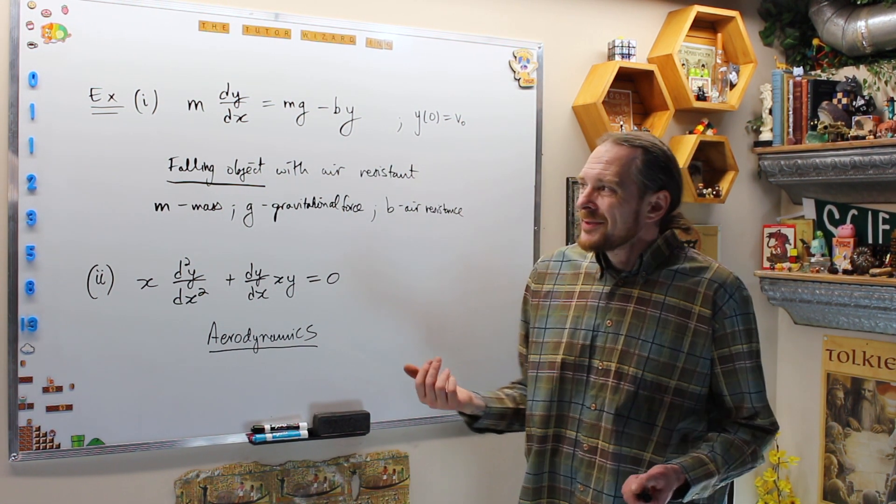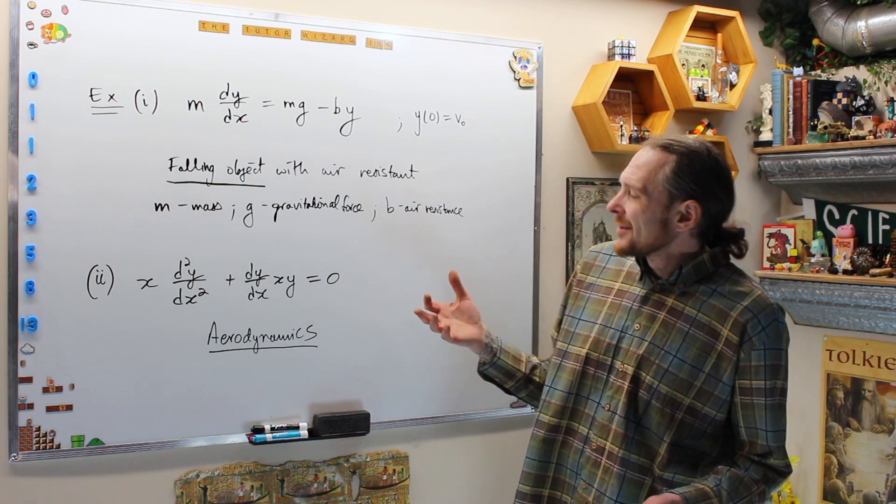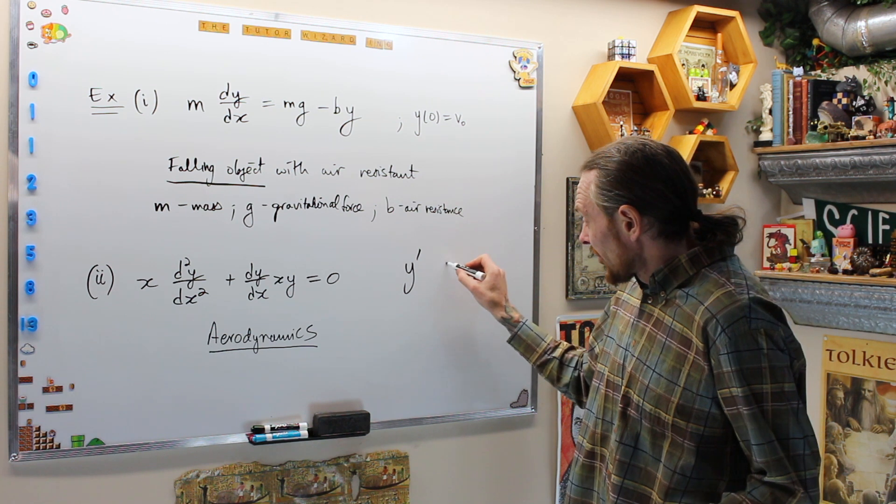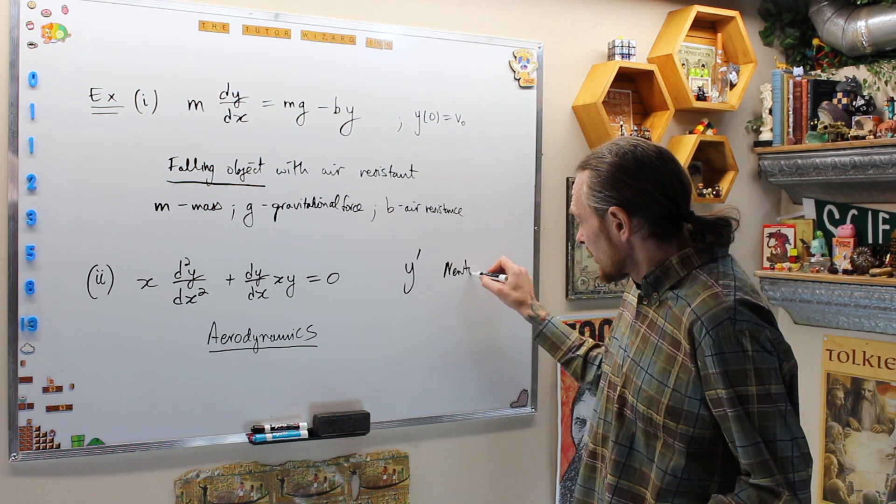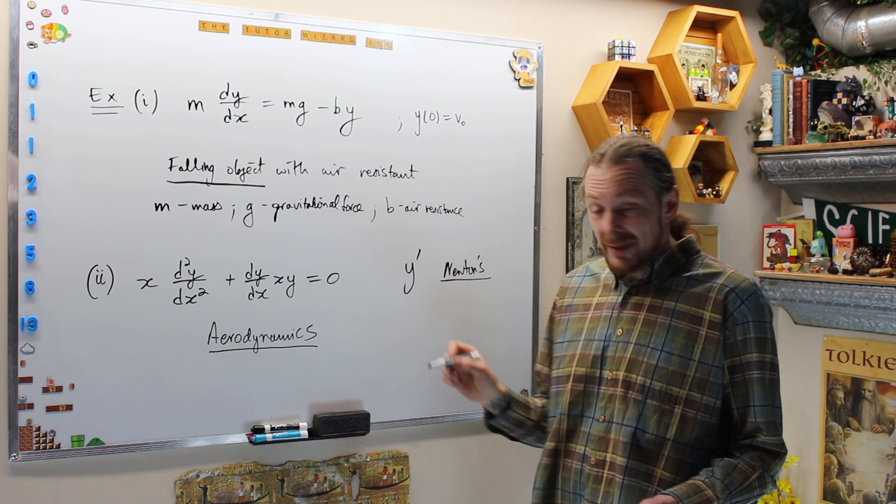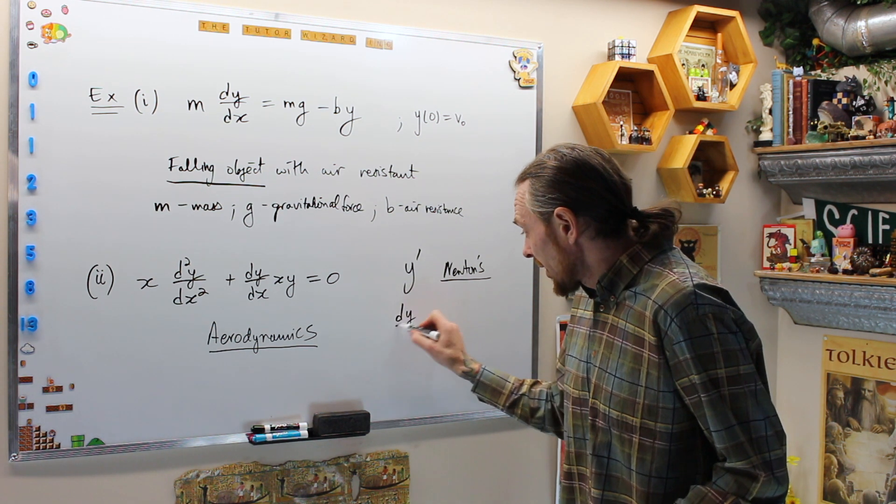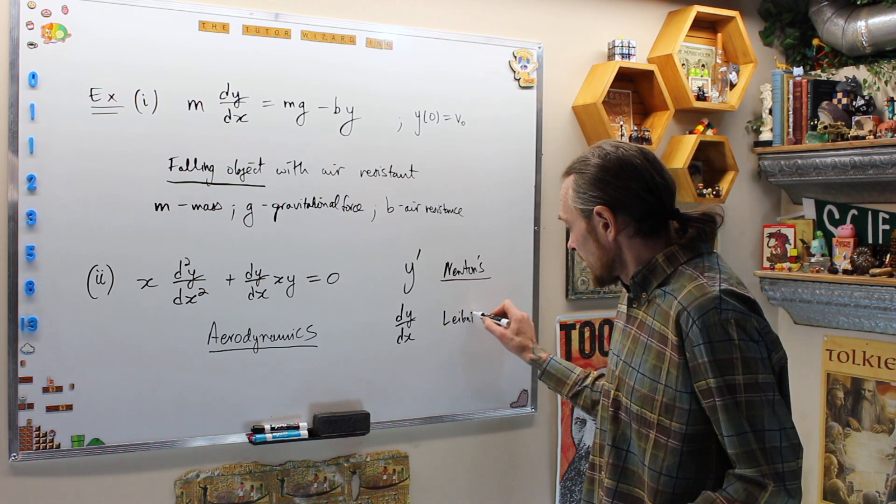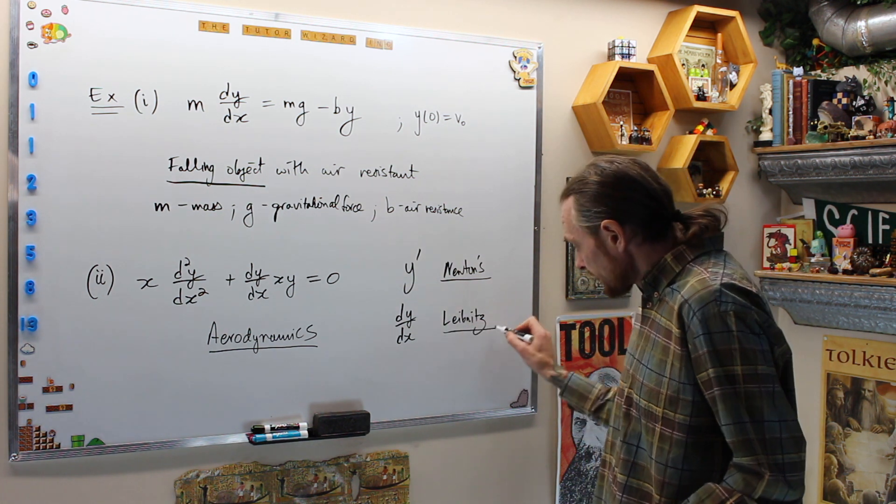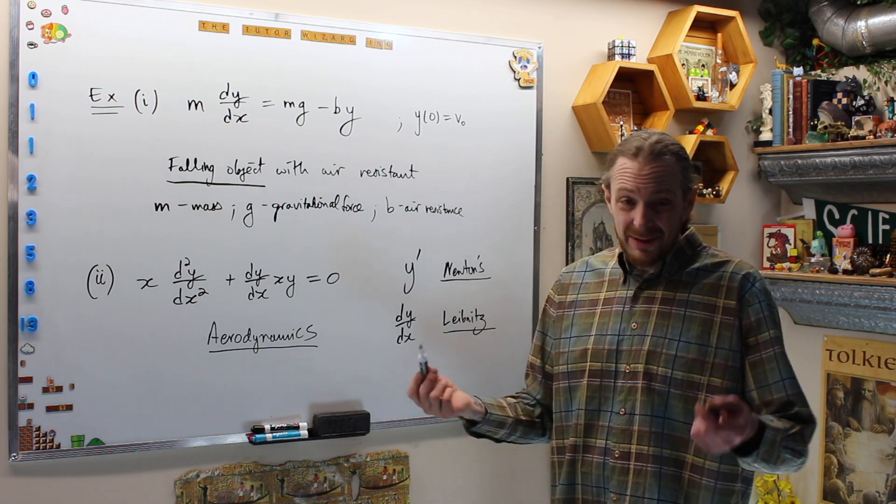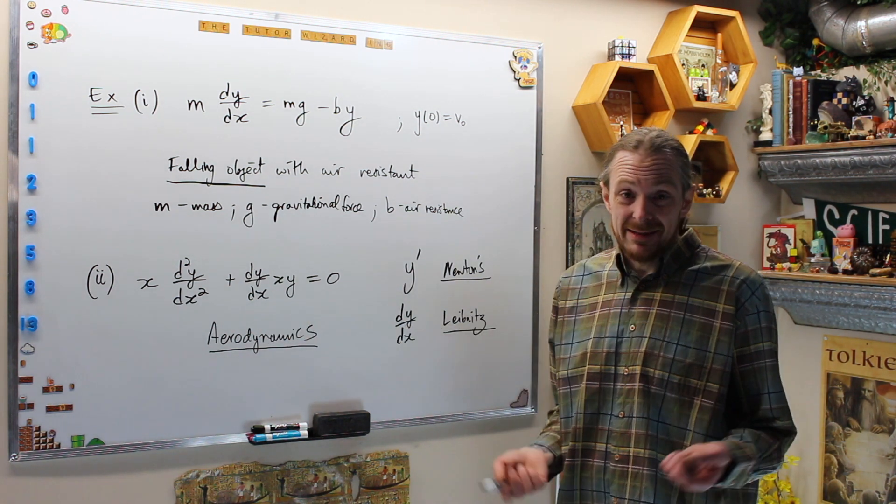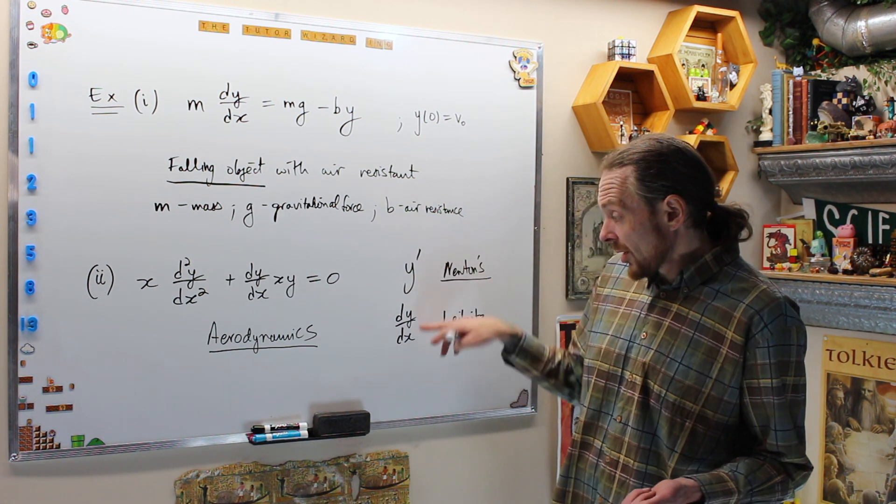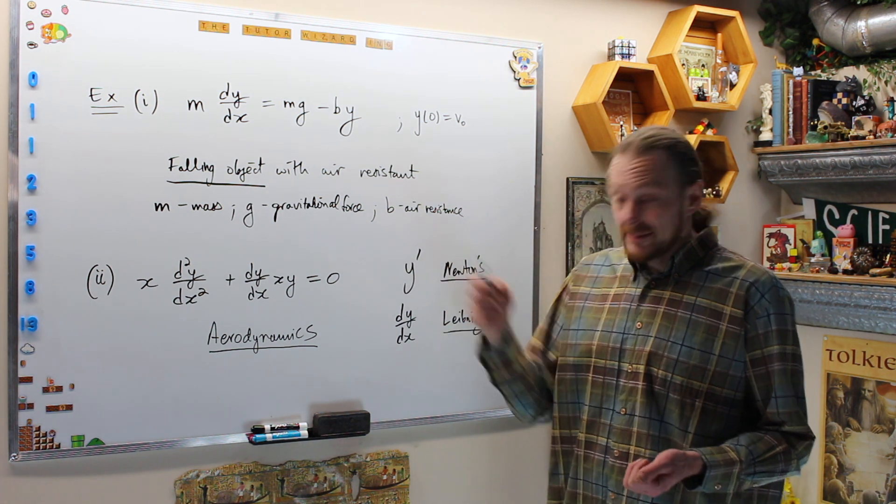Here's a couple examples of differential equations, and we're getting into some details. We're going to use Y prime for Newton's notation of a derivative, and DY/DX as Leibniz notation for the derivative. I'll interchange them. A lot of the time I'll use Leibniz instead of this, but in many books and lecture notes you'll see Y prime or DY/DX for the derivative.